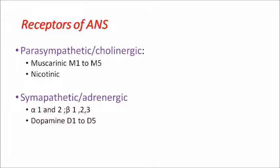For the parasympathetic or cholinergic system, there are five types of muscarinic receptors, M1 to M5, and nicotinic receptors. For the sympathetic system, you have alpha and beta receptors — alpha 1 and 2, beta 1, beta 2, and beta 3 — plus dopamine receptors D1 to D5. Muscarinic and nicotinic are for the parasympathetic system; alpha, beta, and dopamine receptors are for the sympathetic system.